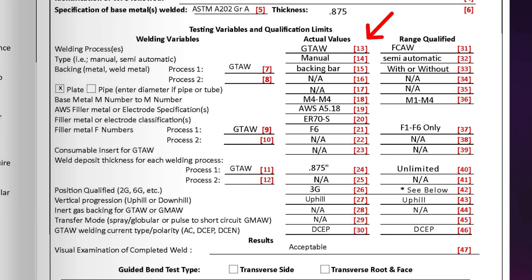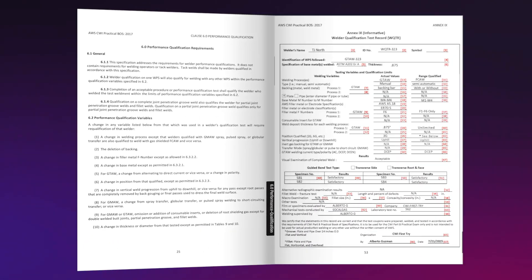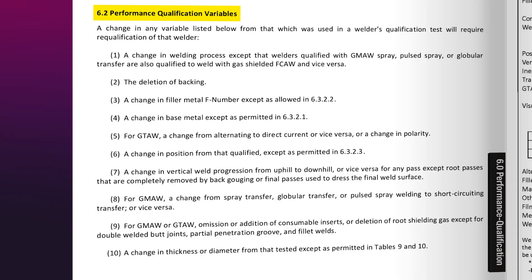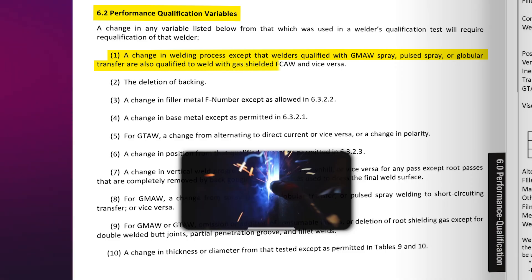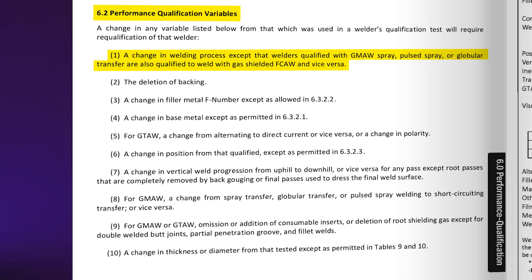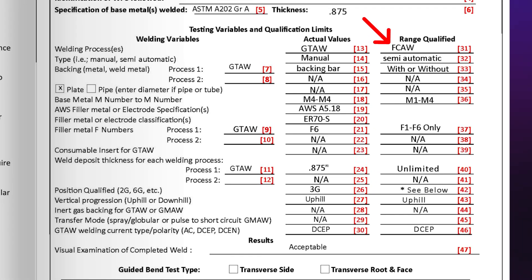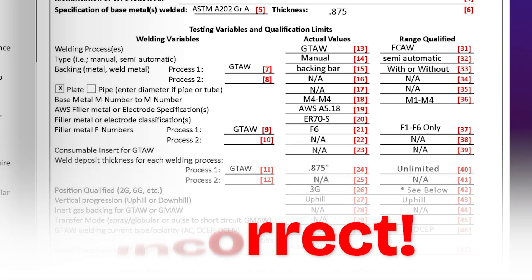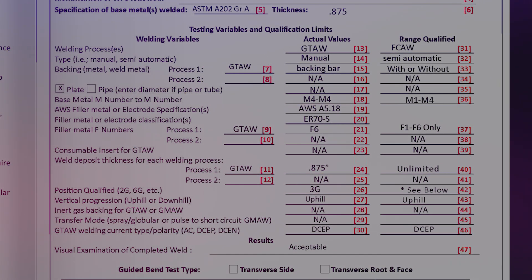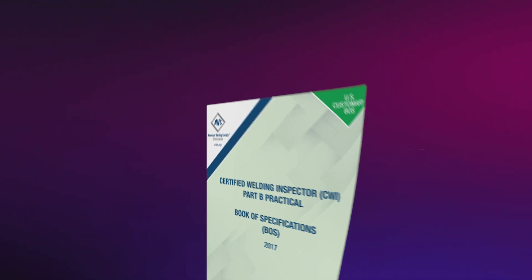Let's start with the welding process on Line 13. According to the actual values, he qualified with GTAW, and the range on Line 31 states he's qualified to weld with FCAW. If you know Class 6, this doesn't sound correct. Looking at performance variables in Section 6.2, specifically Note 1: a change in welding process is an essential variable, except that welders qualified with GMAW spray, pulse spray, or globular transfer are also qualified to weld with gas-shielded FCAW and vice versa. Since the actual value is GTAW — not GMAW with an approved transfer mode — this is an essential variable change, and I would mark this range as incorrect.